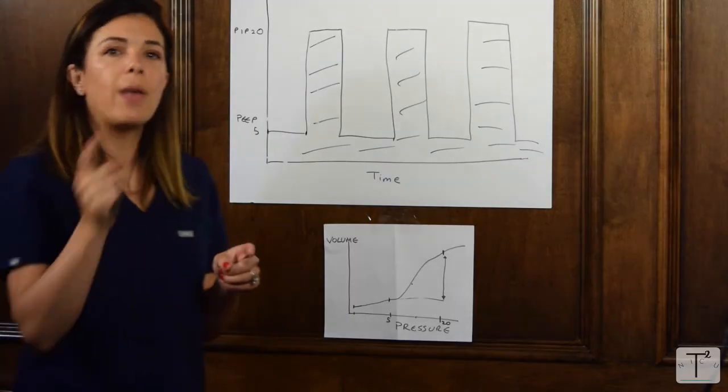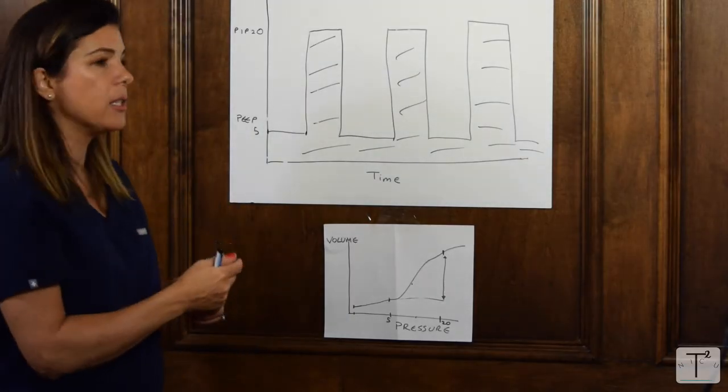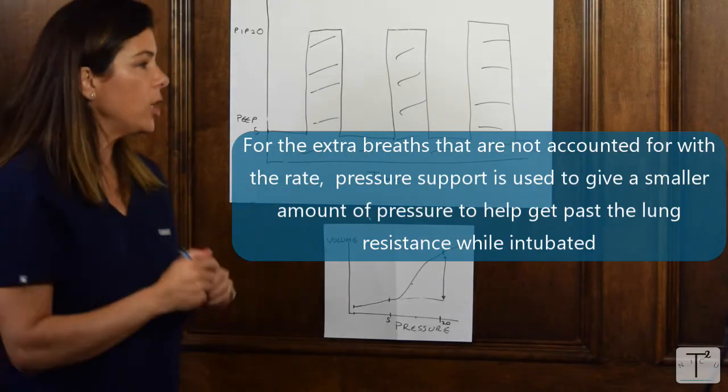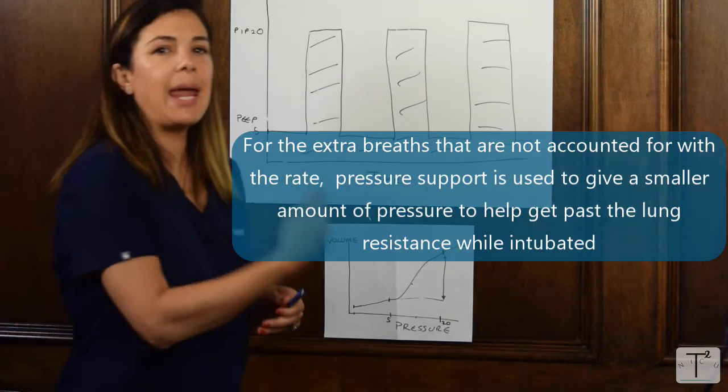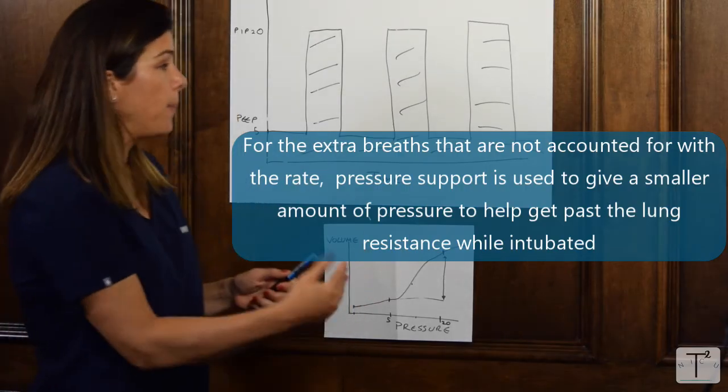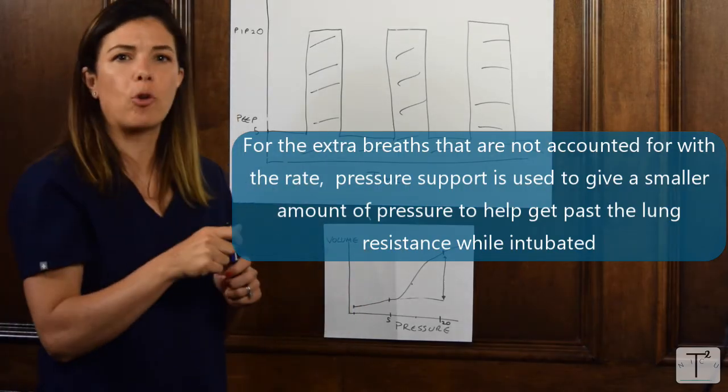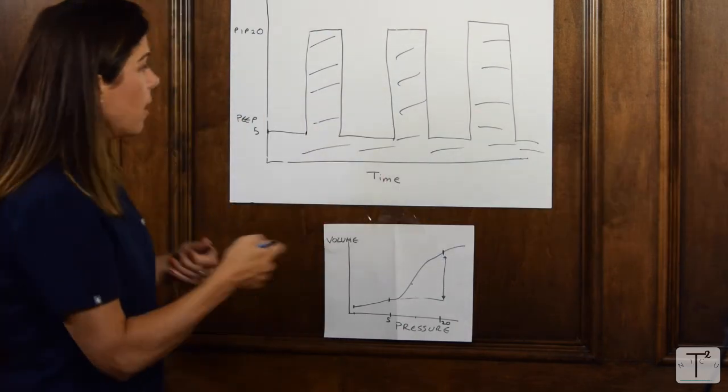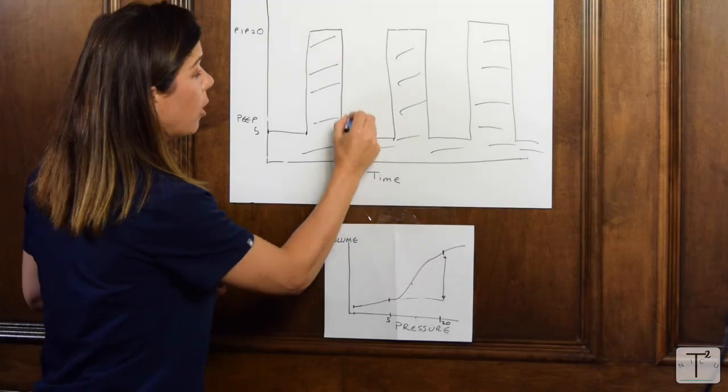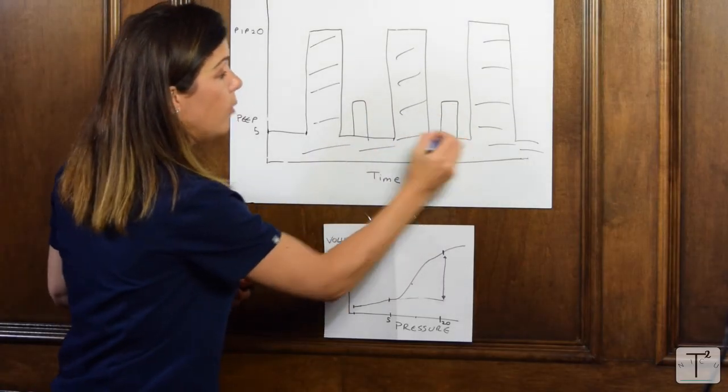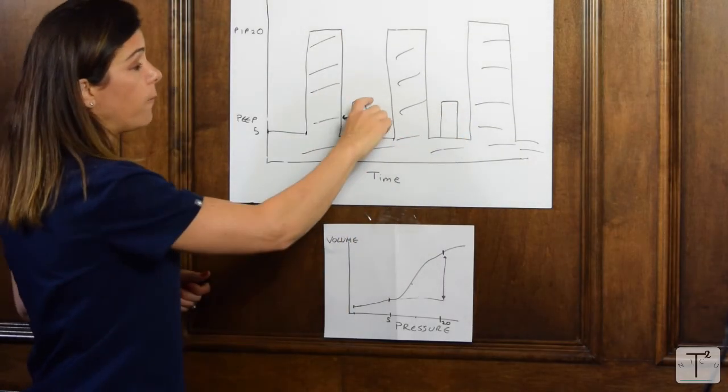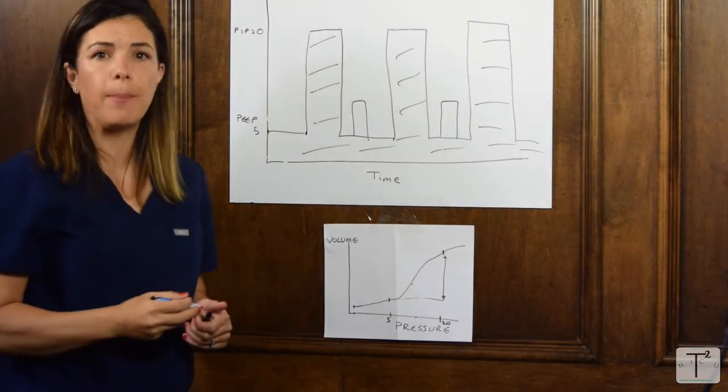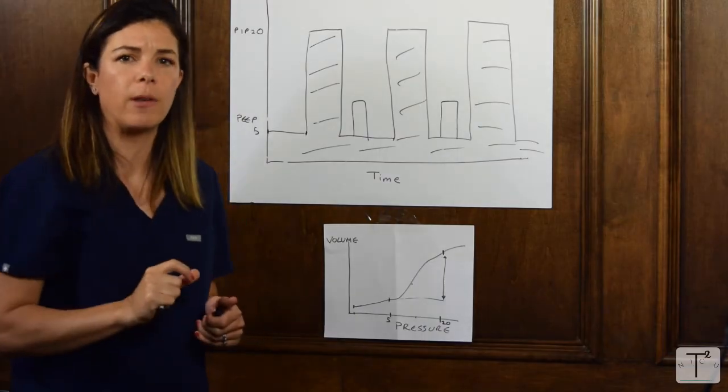For those extra breaths, which are not accounted for by the rate, we type something into the machine called pressure support, which is where when the baby takes a breath, which is not being given the full PIP, we give just a little bit of extra pressure, just to help get over that resistance in the lungs. Your pressure support could look a little bit like this. Not quite the PIP, but a few centimeters of pressure higher than the PEEP, just to help the baby get over that little bit of resistance.